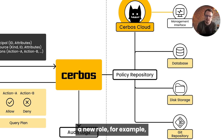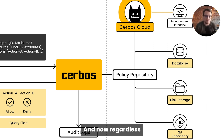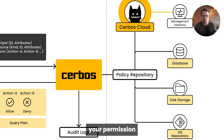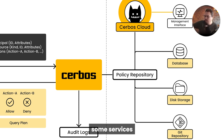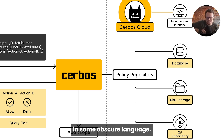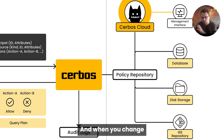So when you need to add a new role, for example, you just update it in one of your policies. And now regardless of where you're checking your permission checks — front-end, back-end, some service in some obscure language — you're going to be getting a consistent answer back based on those policies.